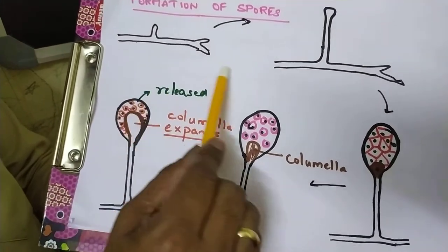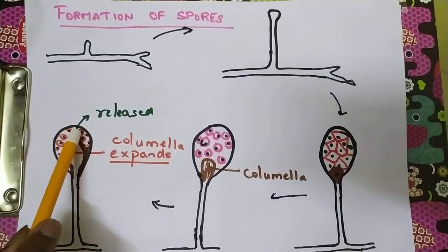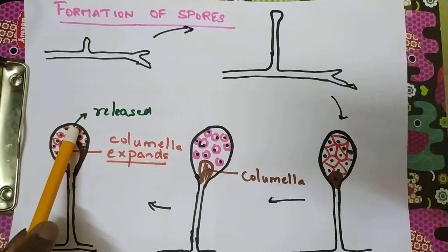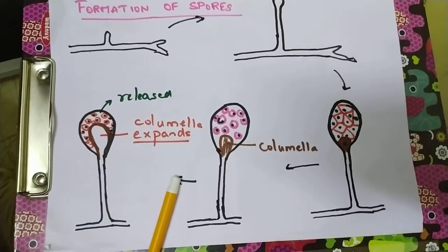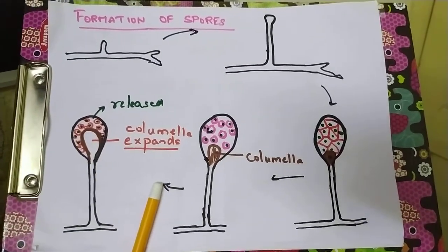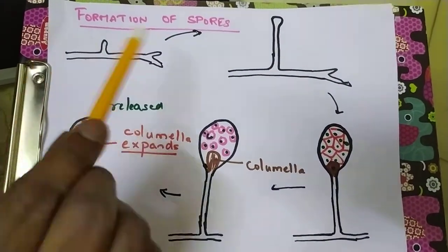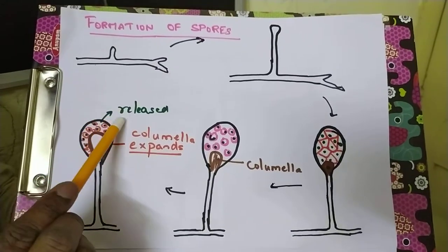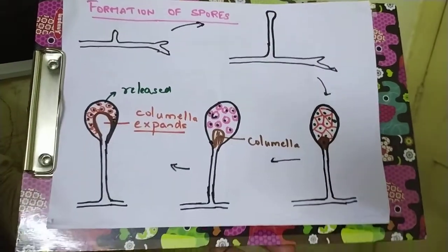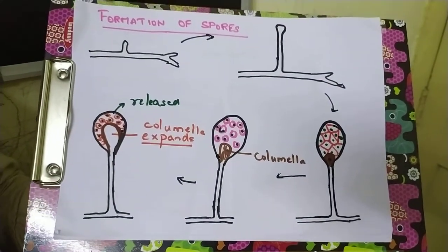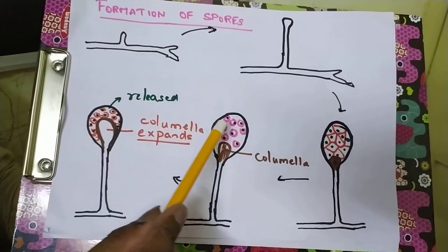Eventually the sporangial wall ruptures and all the spores are released. The spores in this example do not have flagella, so they are aplanospores. This is a typical example of Rhizopus — the mechanism of asexual reproduction in Rhizopus, which produces non-motile spores. These spores are released into the atmosphere and fall onto any food or substratum, where they regenerate a new mycelium.